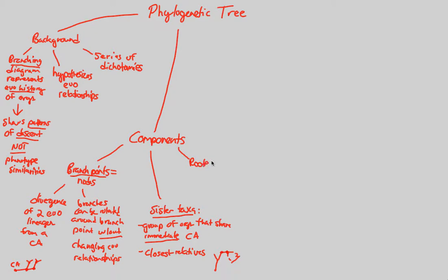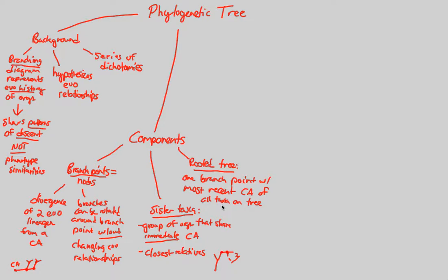We can continue with components by looking at what we call a rooted tree. A rooted tree is a tree in which you have one branch point with the most recent common ancestor of all taxa on the tree. Taxa is just a portion of the tree — those are the classifications. When you have one common ancestor that all of these taxa come off of, you have created a rooted tree, giving you a very powerful evolutionary relationship.